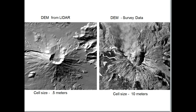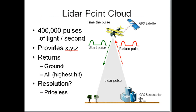A bare earth model has no trees, no buildings, no cars — everything has been removed because only the ground-hit LIDAR signals that had to travel the farthest were collected. The highest hits can give you tree canopy. I've seen power lines, building footprints, and tops of buildings extracted from high-hit LIDAR data.